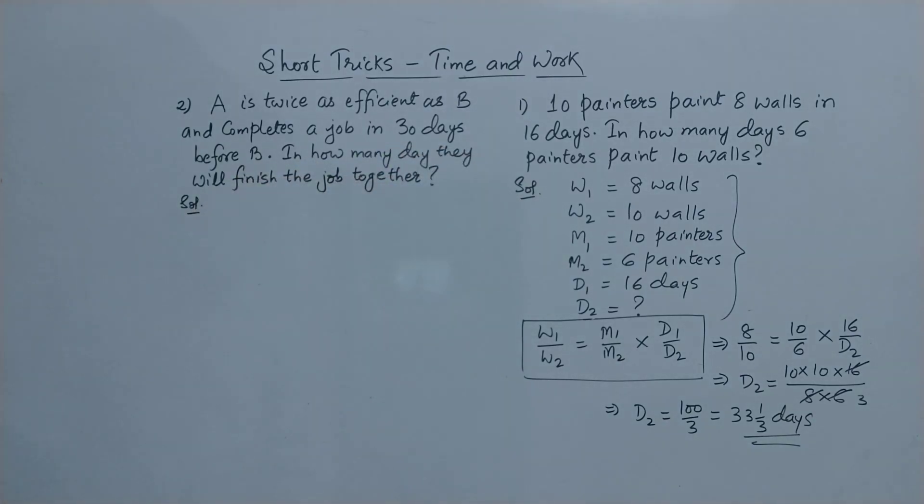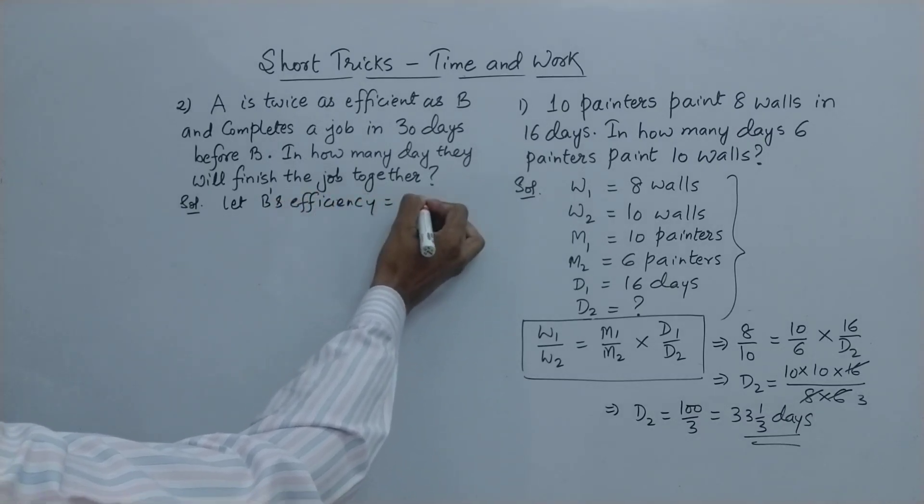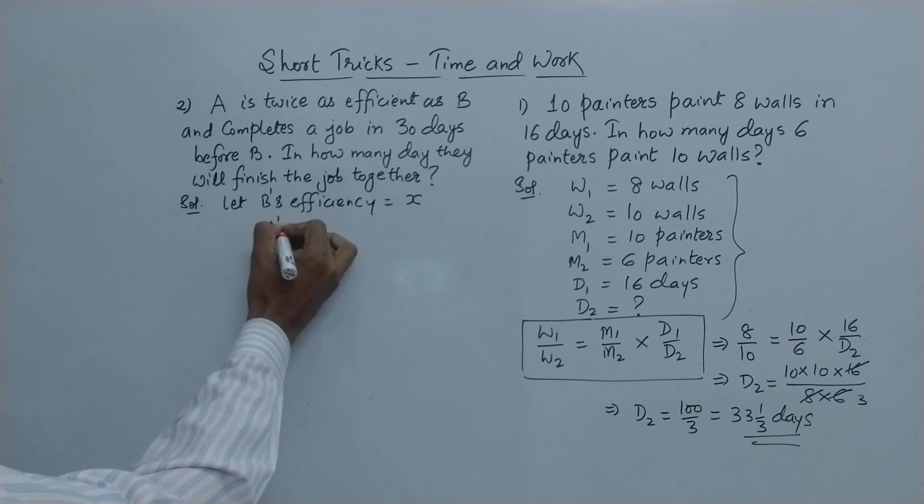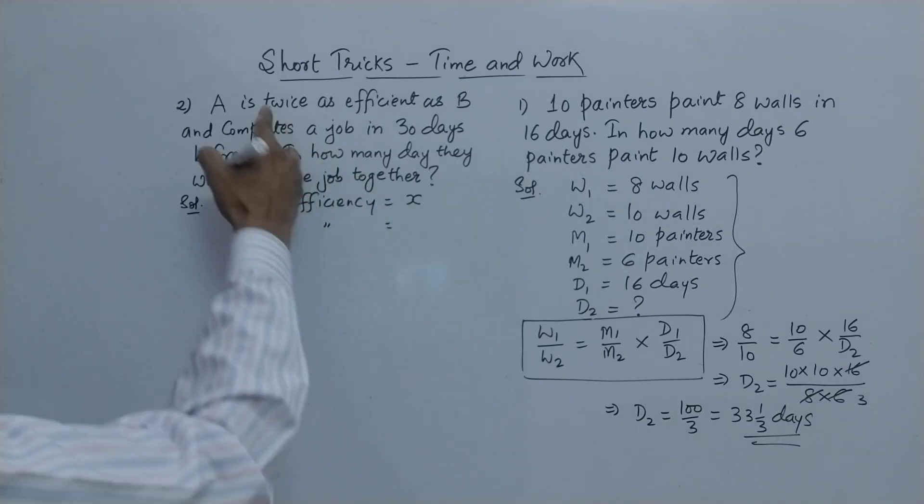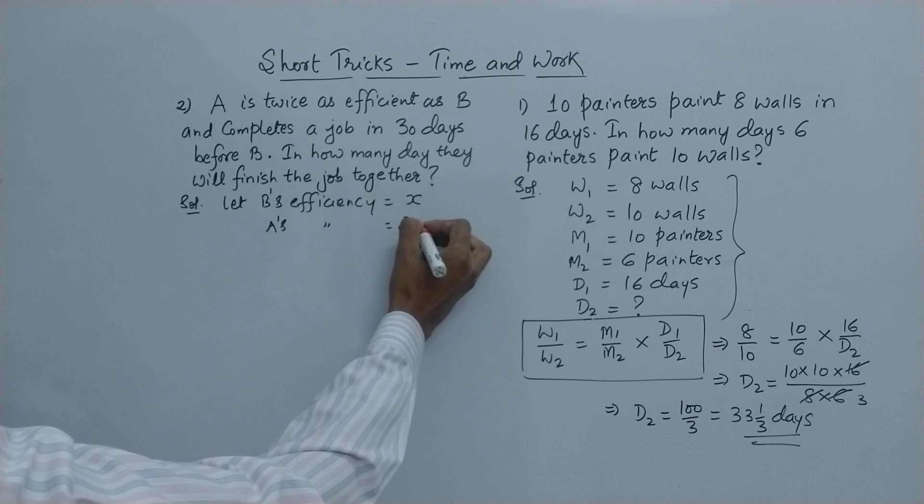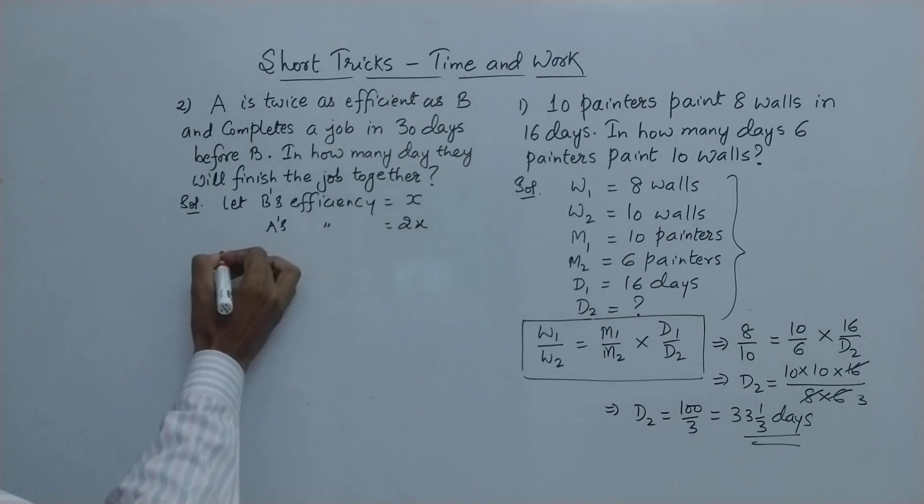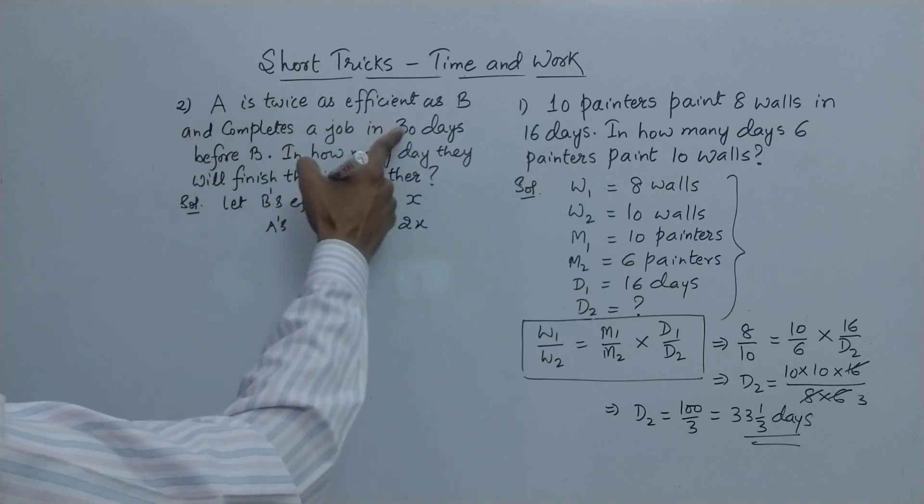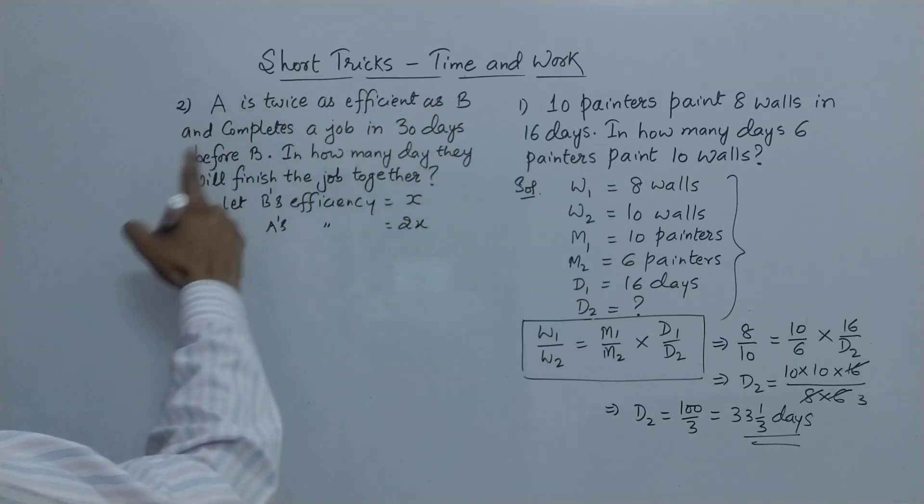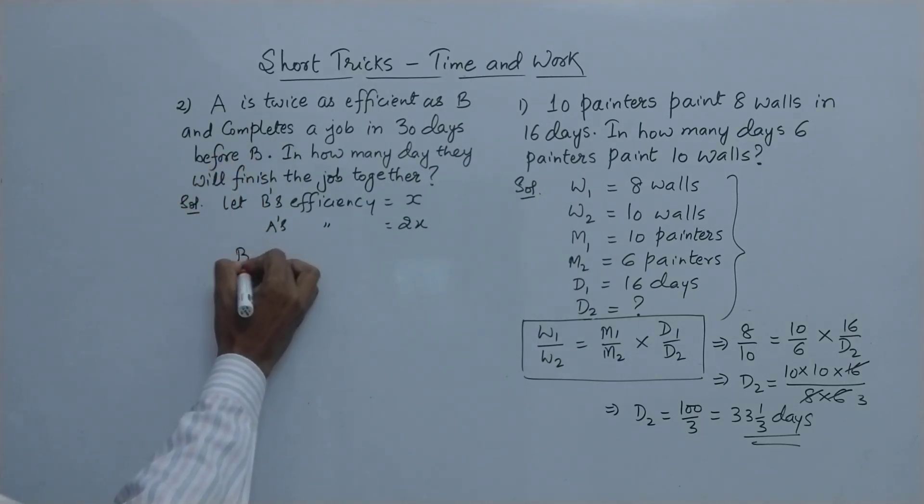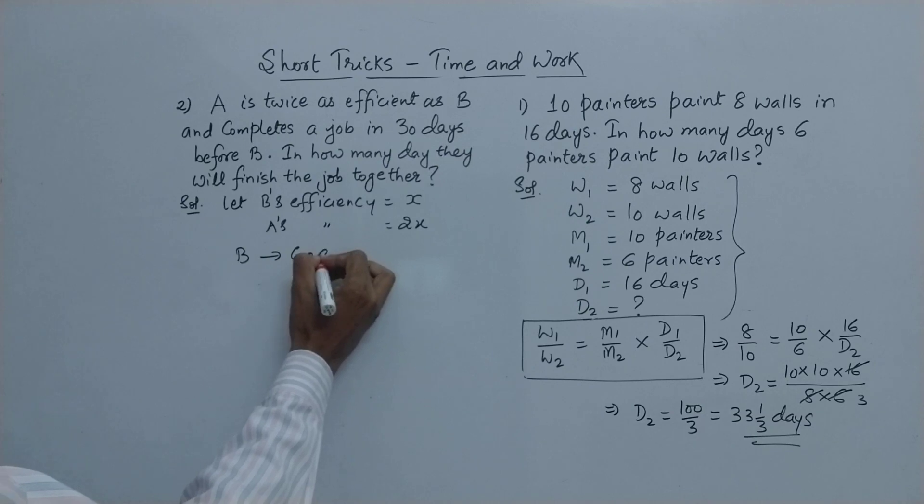Now here you have to assume that B's efficiency is x, so A's efficiency, obviously it is given A is twice as efficient as B, so 2x. And A is completing the job 30 days before B.